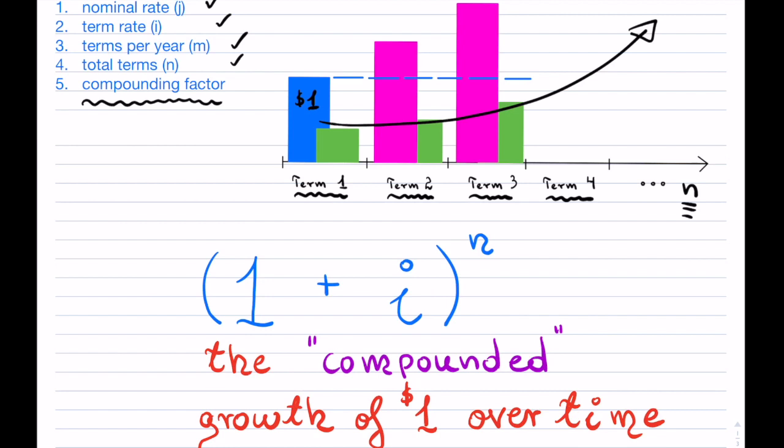And these terms that we have grow on a continuous basis. So here is our dollar, here is the growth, at least in the first term, but we're interested in what happens not just in one term, but in N terms to that particular dollar. So that's the formula that we can use, and it is known as the compounding factor.